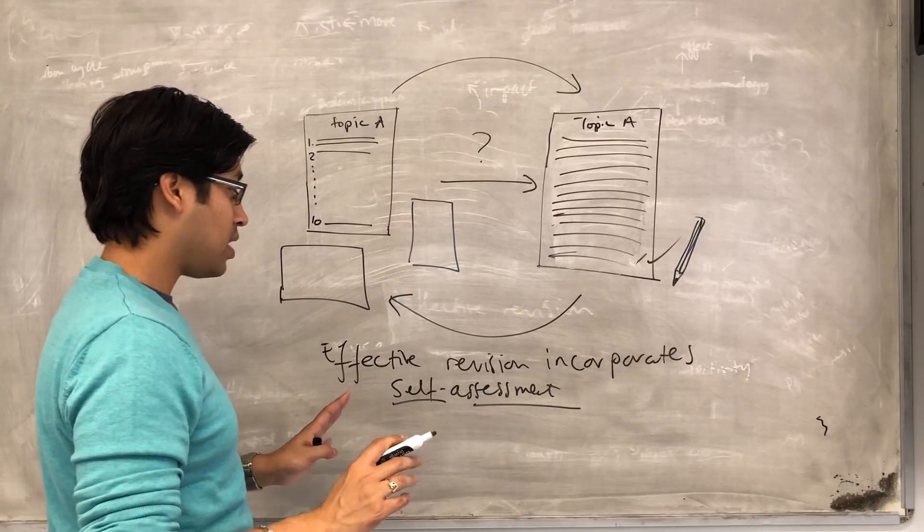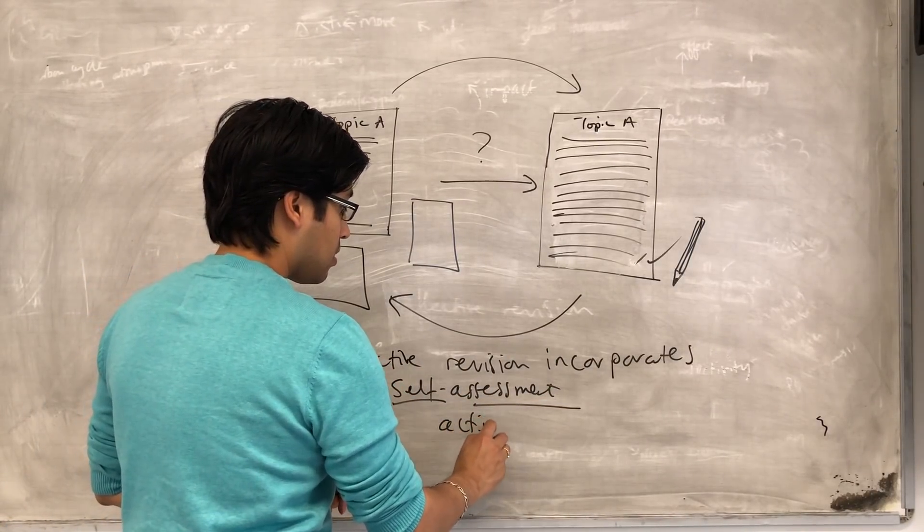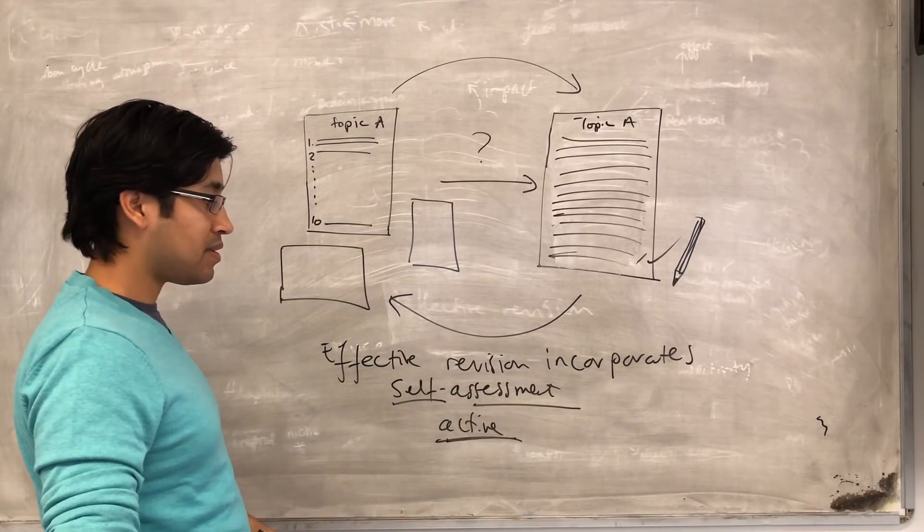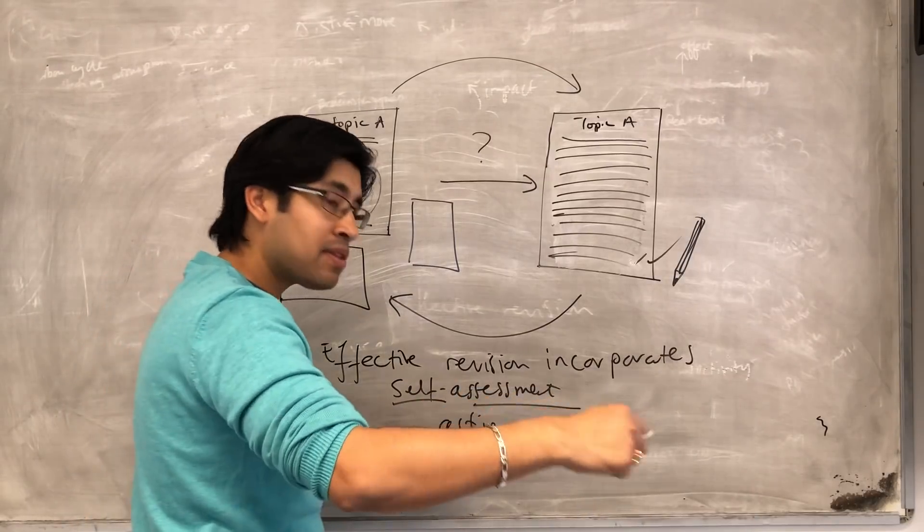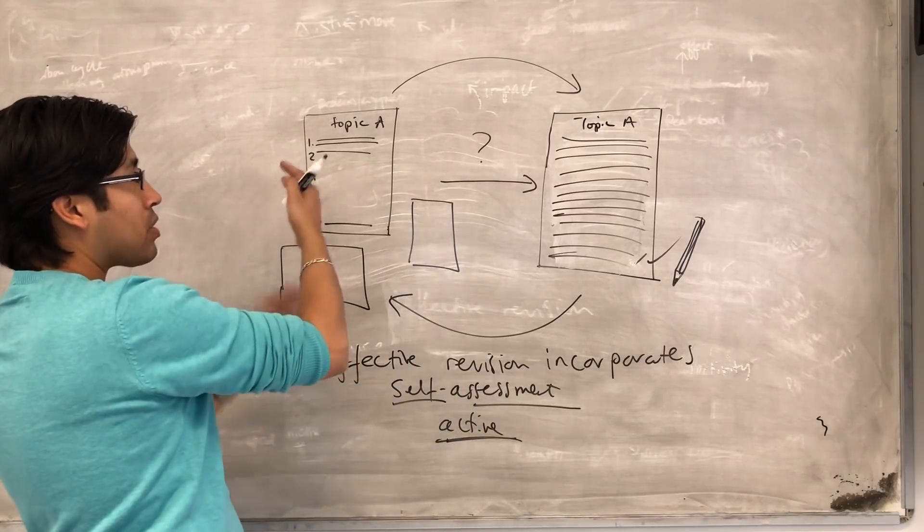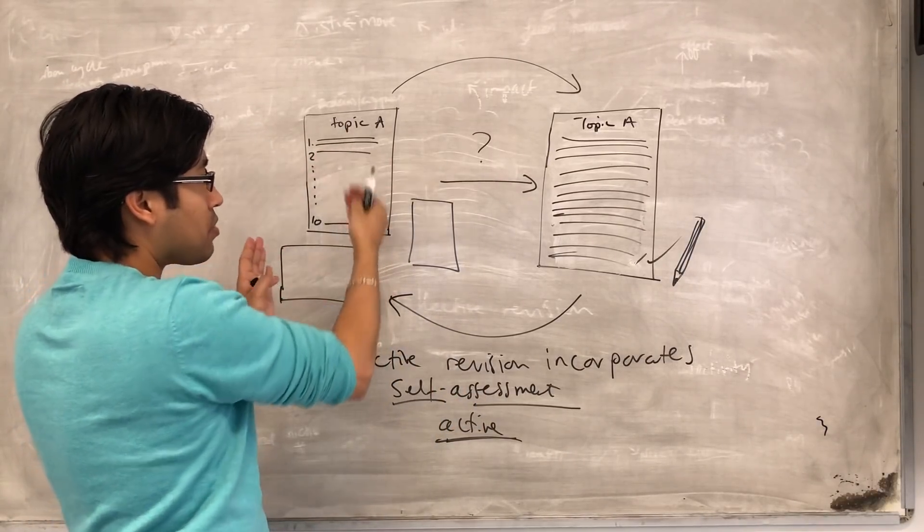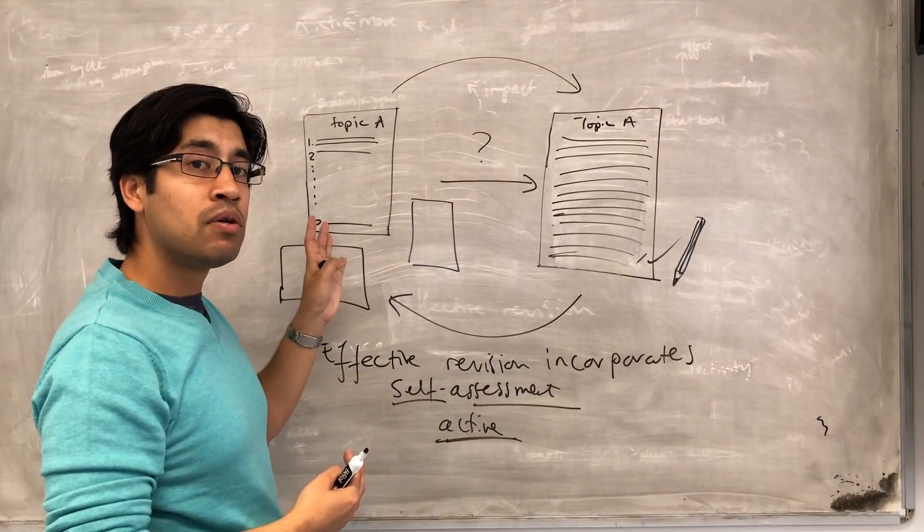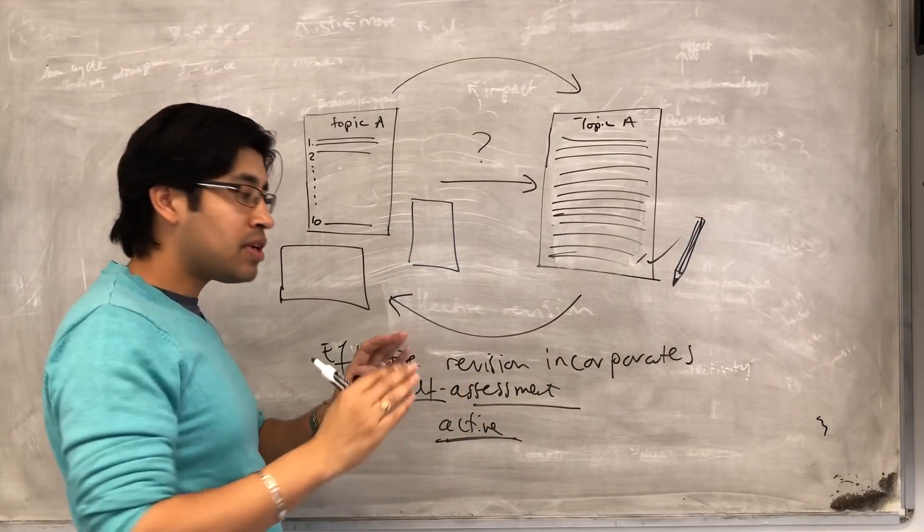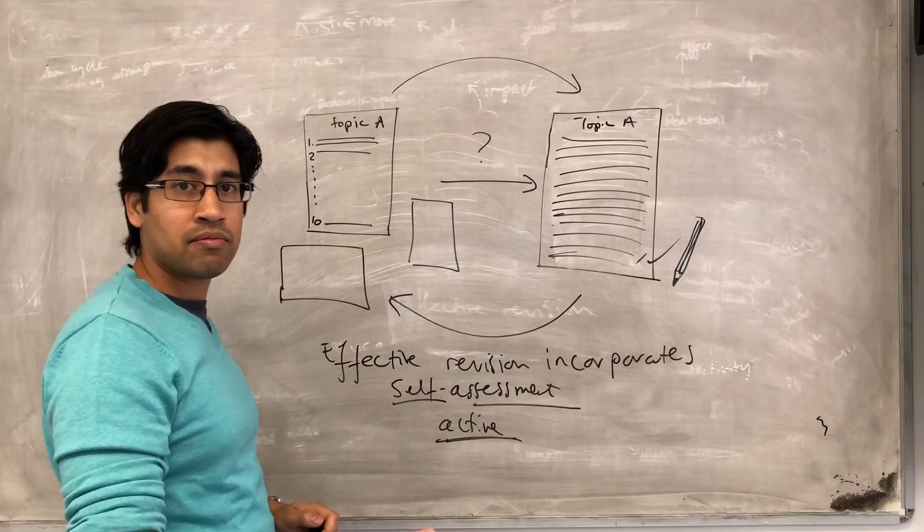Be careful of this. Because this process is active. Think about your own revision process. Is it active? Are you writing things down? Are you asking yourself questions about whether you get it or not? Are you going back to your notes and seeing, finding out things that you don't get? Or is it passive? Are you just reading, just sitting there and reading, and is it passive? You want to avoid that.